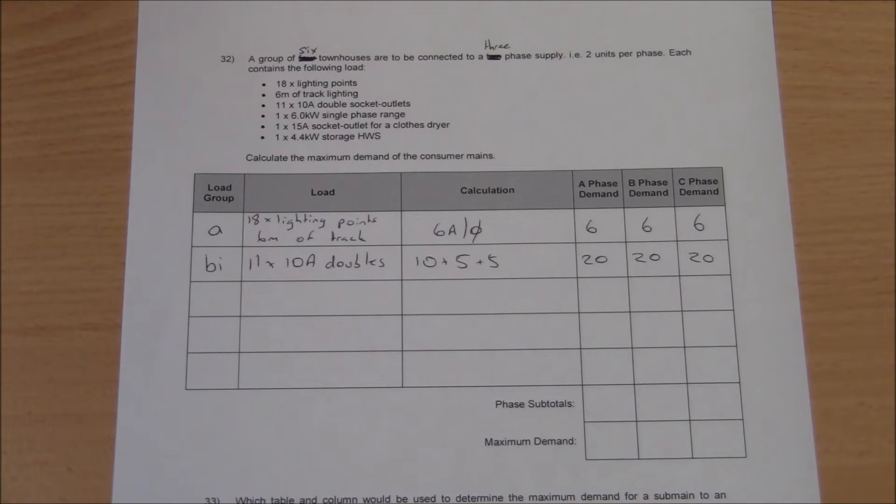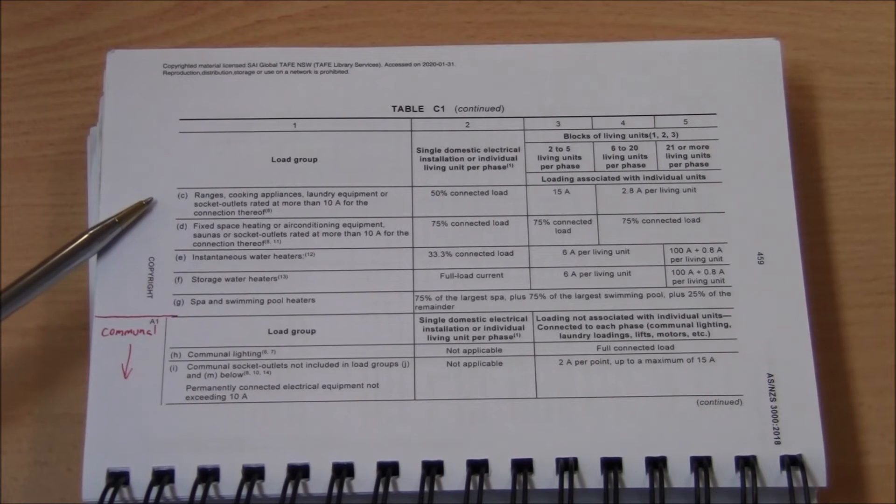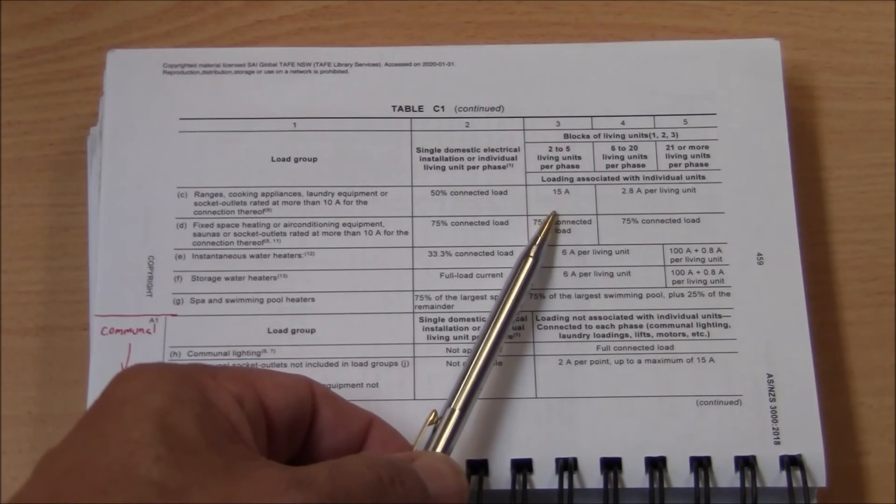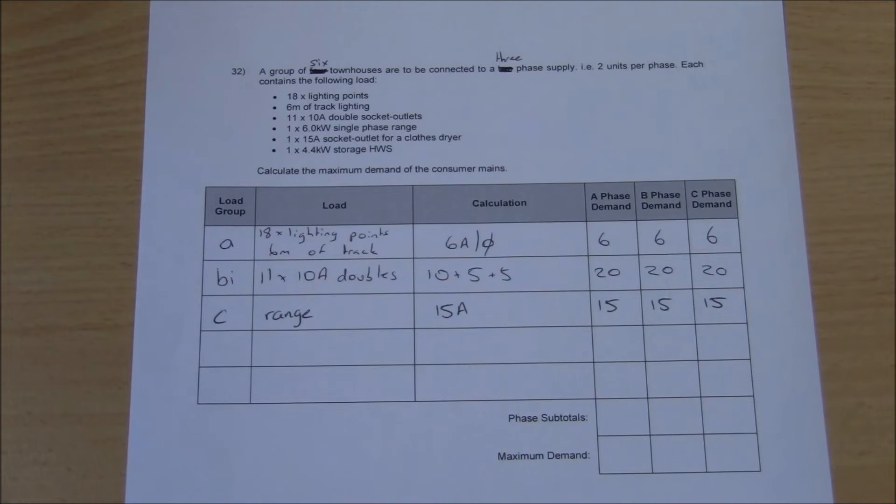Next on the equipment list, each unit has a single phase range rated at six kilowatts. Load group C is the appropriate load group for the range, and once again column 3 indicates 15 amps. While we're on the topic of load group C, we note that the next item, a 15 amp outlet for a clothes dryer, falls under the same group. As such, we've already included it.